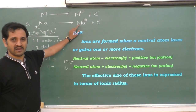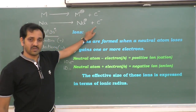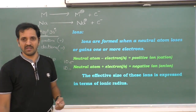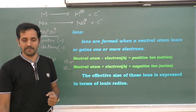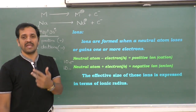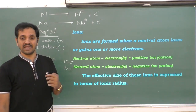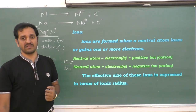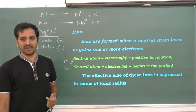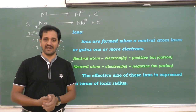Cations are the ions generated when a neutral atom loses one or more electrons. Applying this to magnesium: from its valence shell, two electrons are removed to give Mg2+. For aluminium, three electrons are removed from the valence shell to give Al3+.